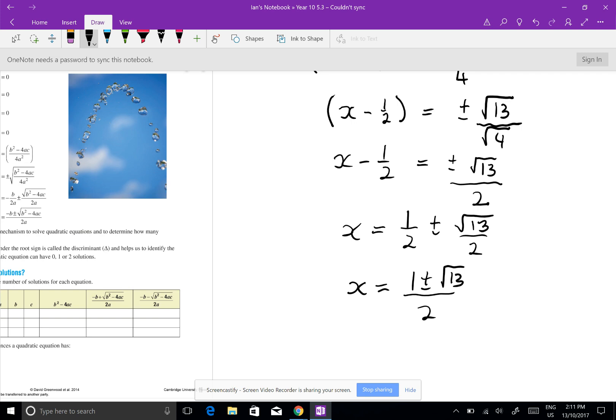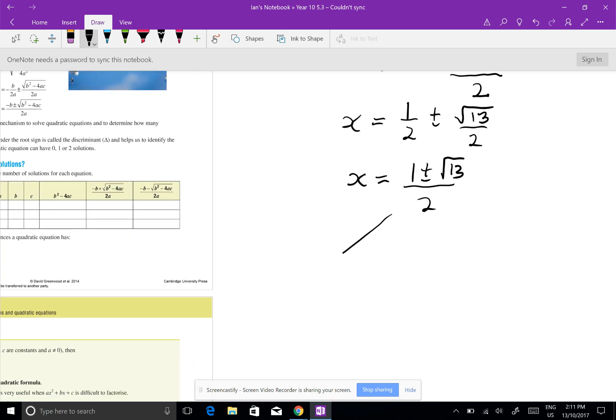Now in the back of the book Margaret writes that one as the two separate ones, which you can do, so you can have the 1 minus root 13 all over 2 and you can have the 1 plus root 13 all over 2. But I will accept that answer or these answers, they're all the same, they're all right. So good luck with that and get that done by the time we come back to class next.